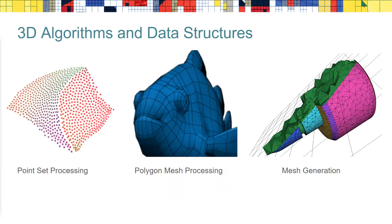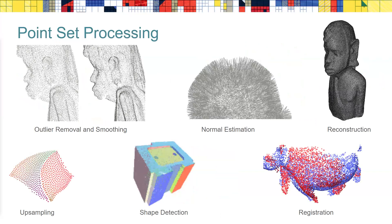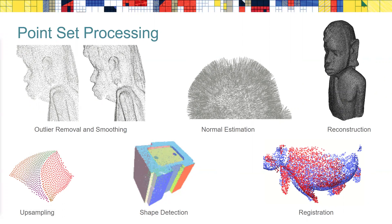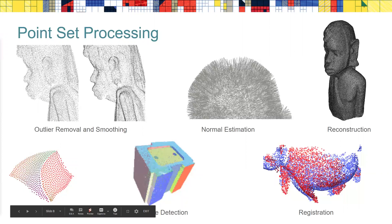The next couple of slides are in 3D about point set processing, polygon mesh processing and mesh generation. In point set processing, you find elements of a surface reconstruction pipeline: removing outliers, doing smoothing of the point set, estimating normals, Poisson surface reconstruction and other reconstruction algorithms. You have algorithms for upsampling to get a denser point cloud, algorithms for shape detection which identify points sitting on the same face because they are co-planar or on a spherical patch. There are also recently added registration algorithms through collaboration with the OpenGR project.